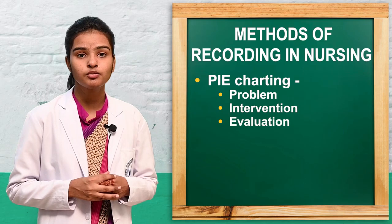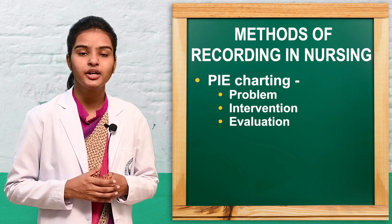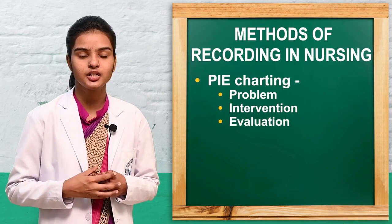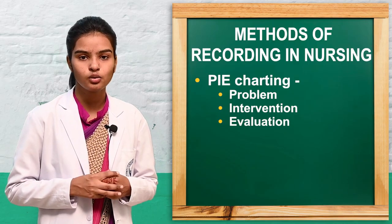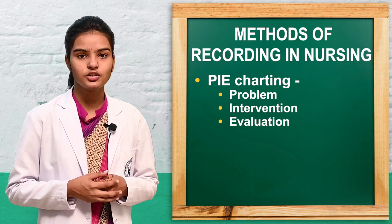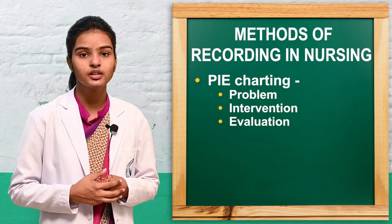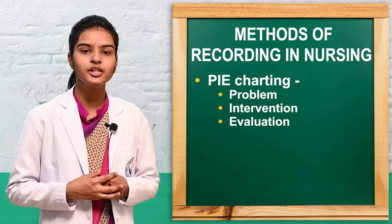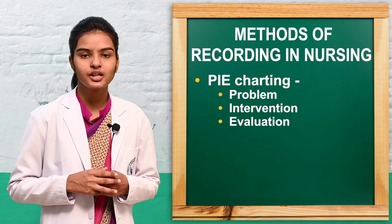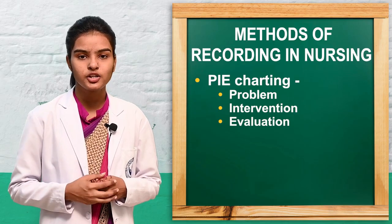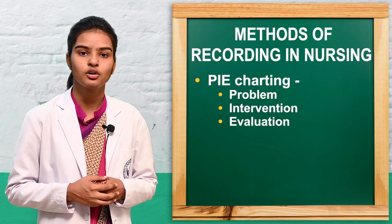For I in PIE charting, the nurse records the intervention — for example, the care given to address the patient's complaint. That is the intervention for the pain the patient was complaining about earlier. For E, evaluation: the nurse records the evaluation result, such as the patient now reporting pain relief at 1 out of 10. So PIE charting documents the problem statement, the intervention, and the evaluation.